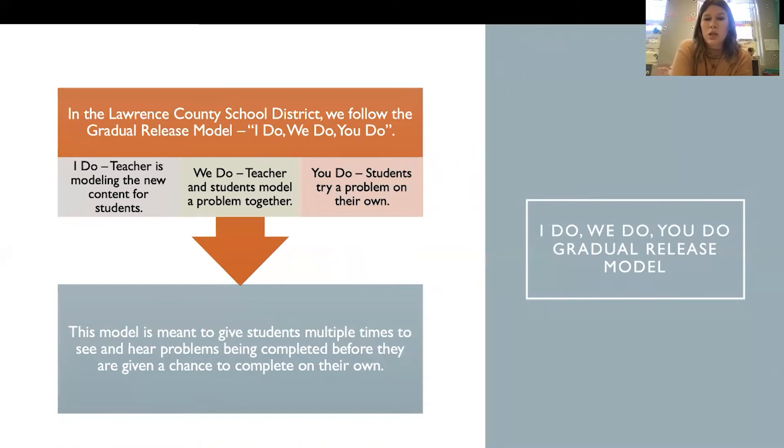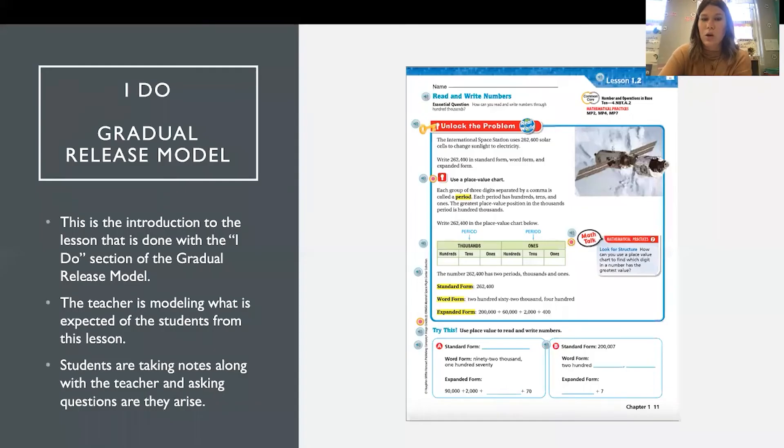In my school, I do we do you do gradual release model, and all that is is the I do is the teacher modeling the new content for the students. We do teacher and students model a problem together, and then you do students try a problem on their own. This model is meant to give students multiple times of seeing how something is supposed to be solved before they get a chance to do that on their own.